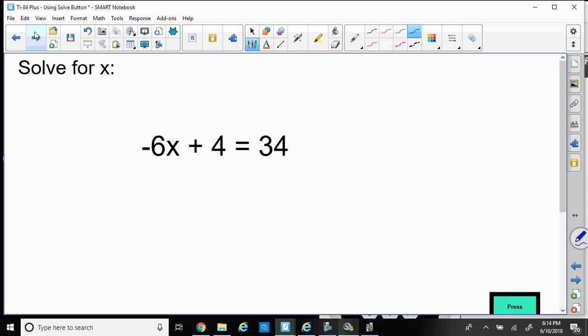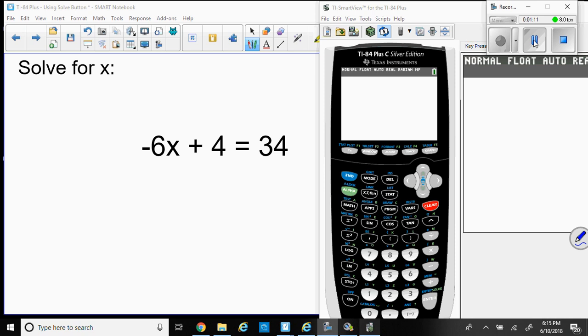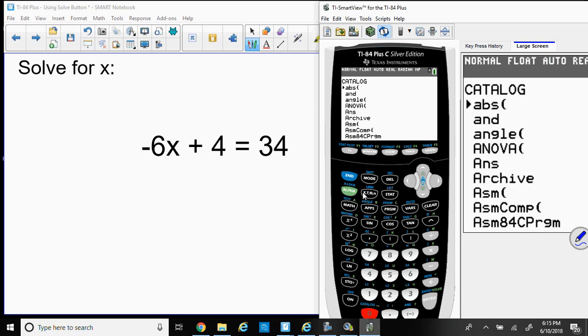So let's try a question. Here's our first question: -6x + 4 = 34. Alright, so let's use that. Okay, I got my calculator.